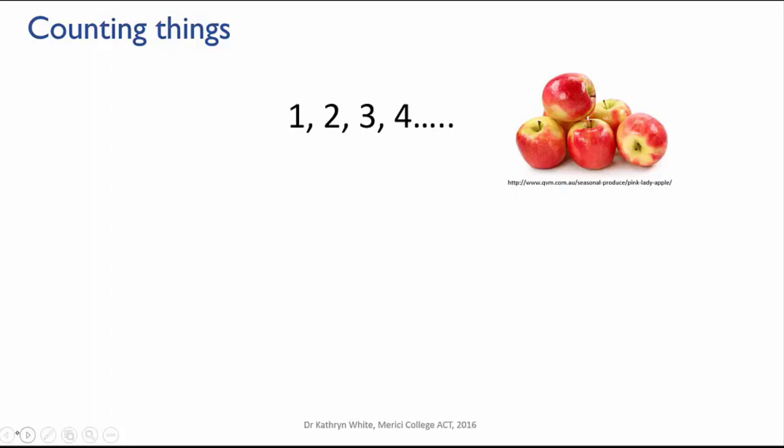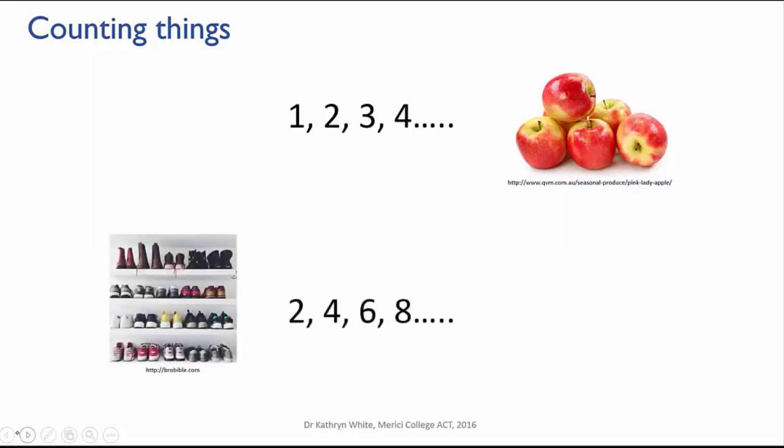Sometimes it's convenient to skip count. For instance, shoes usually come in pairs so if you have a lot of shoes to count you would count by twos. Two, four, six, eight. And rather than saying there are 40 shoes in this picture here, you could say there are 20 pairs.